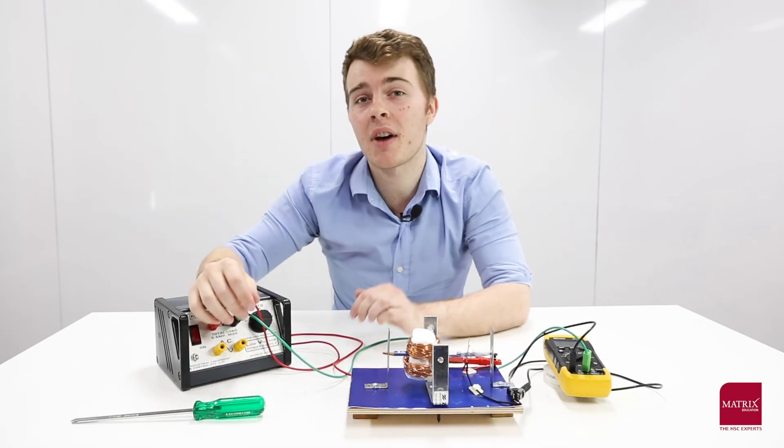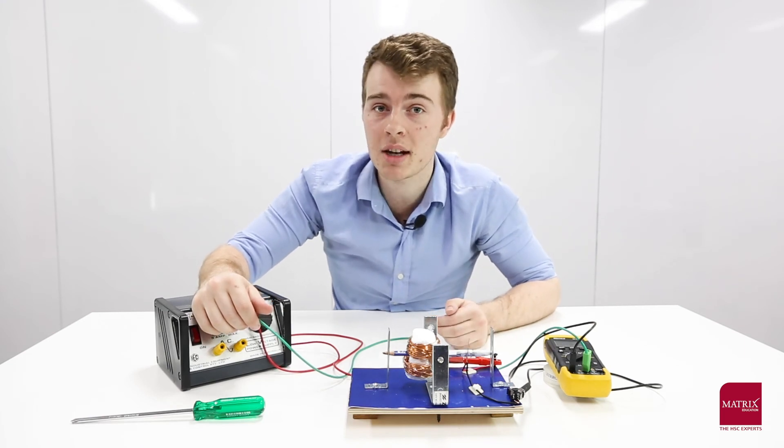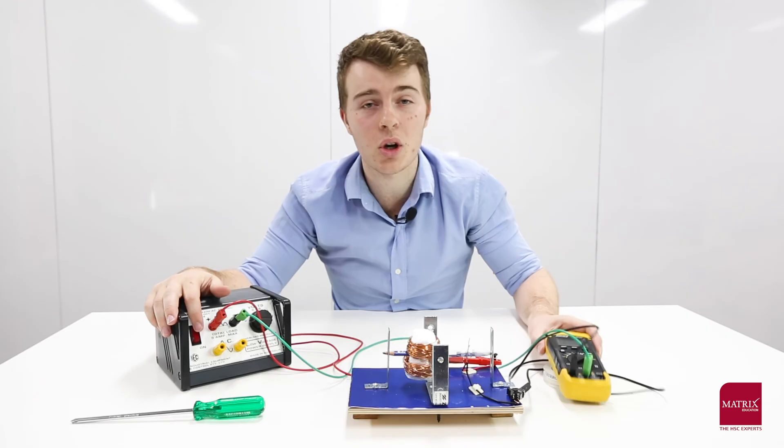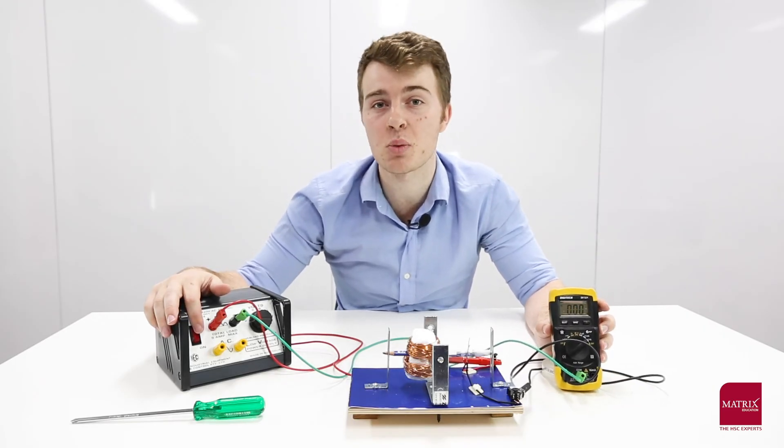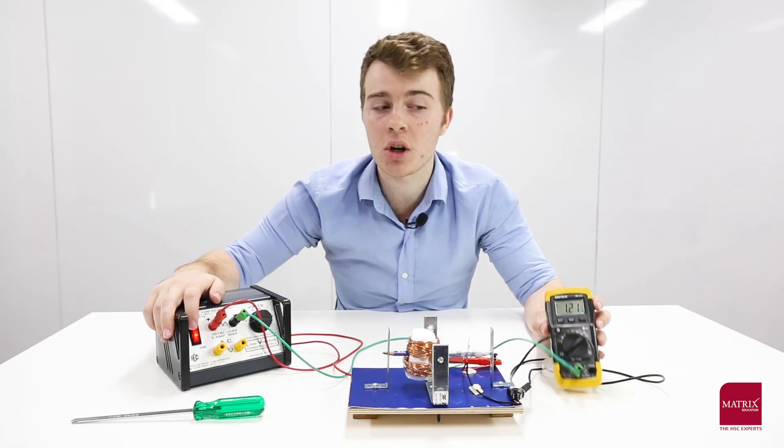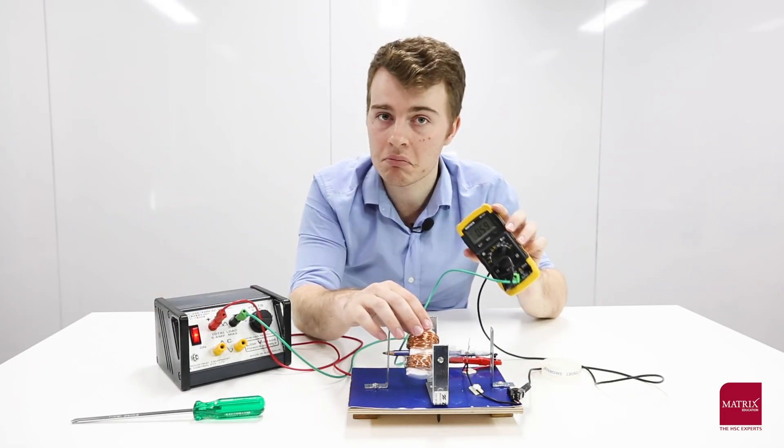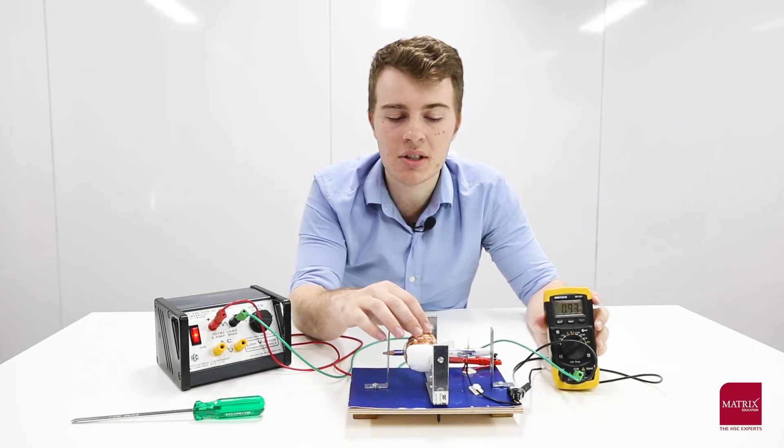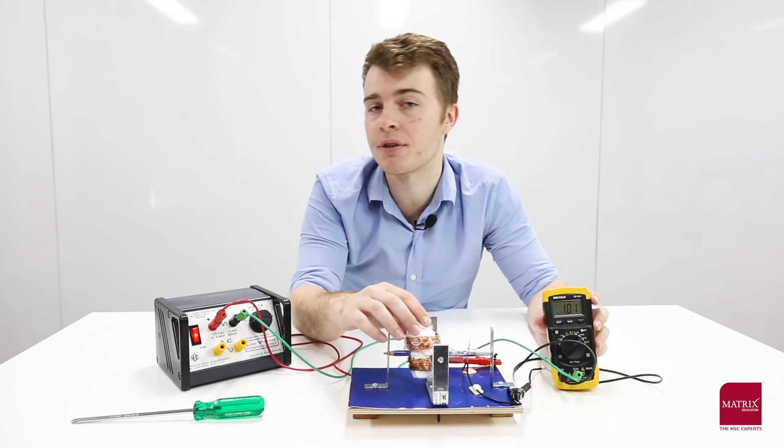Now the second problem that you're going to find is poor electrical connection between your brushes and your commutator. To diagnose this, we're going to be using a multimeter set into amp mode and put in series with our motor. When I turn it on, we should see that we're getting some current flowing through our motor.